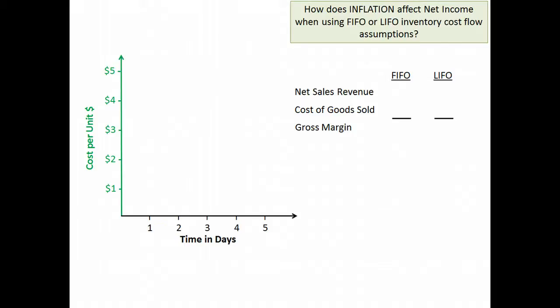Let's just set up a scenario. Let's say on day one, we buy one gumball at a unit cost of $1. Day two, one gumball at a unit cost of $2. Day three, a gumball at a unit cost of $3.